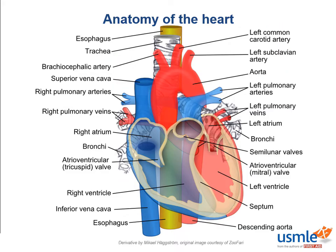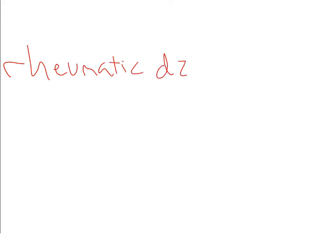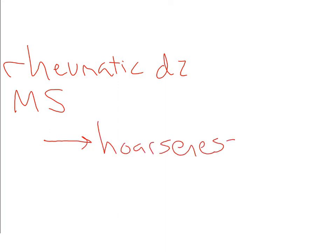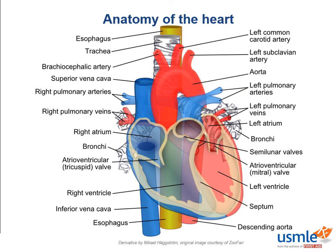The last high yield fact is the relationship between the most posterior part of the heart with an important nerve. A 54-year-old female with a history of rheumatic disease has been followed for mitral stenosis and has been experiencing worsening hoarseness and dysphagia over the last few months. The point is to understand the anatomic relationships between the left atrium — the most posterior portion of the heart — with the esophagus and the left recurrent laryngeal nerve, which is a branch of the vagus nerve.